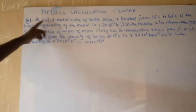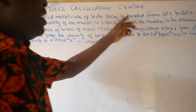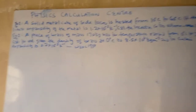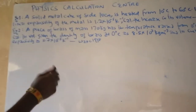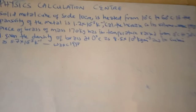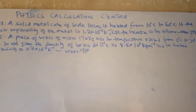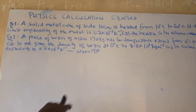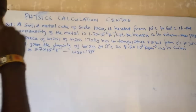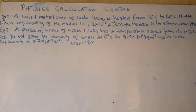A solid metal cube of side 10 cm is heated from 10°C to 60°C. The linear expansivity of the metal is given. Calculate the increase in volume. We know in linear expansivity there is nothing like volume, but once you are asked to calculate volume, you should know volume has to do with cubic expansivity.